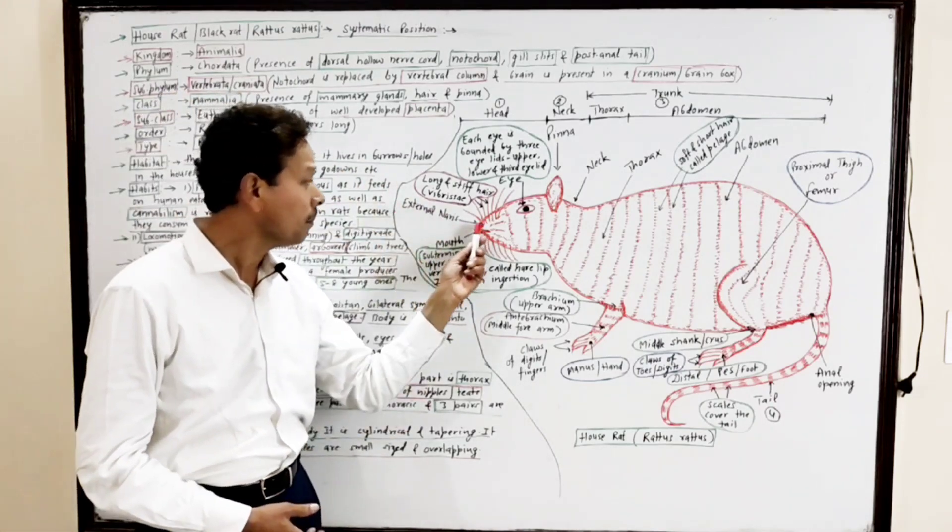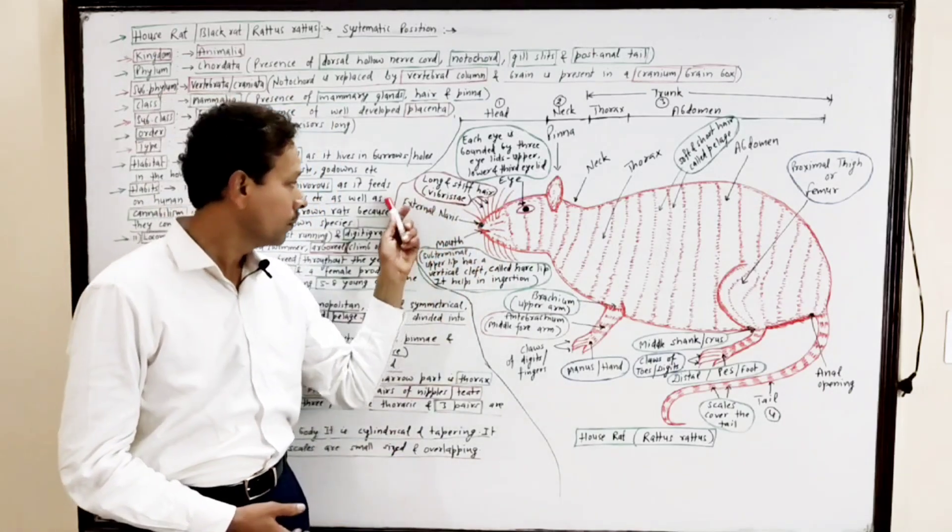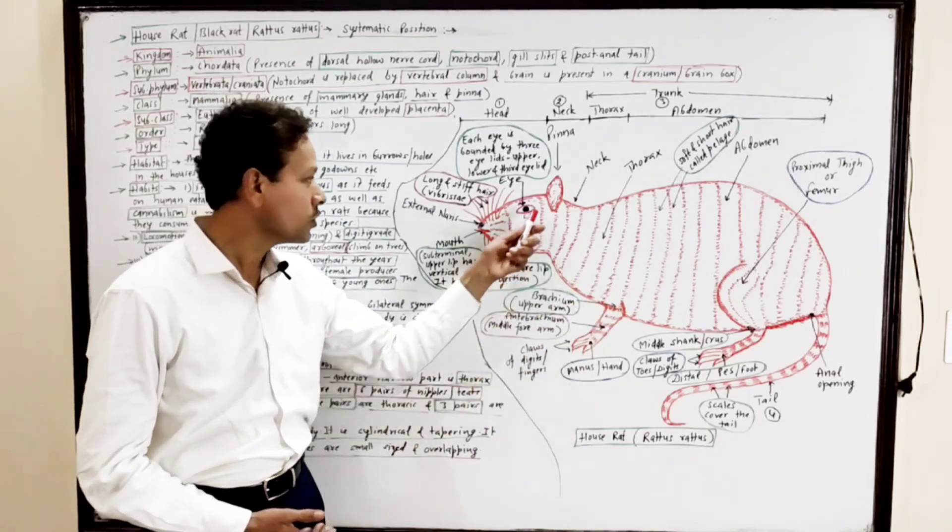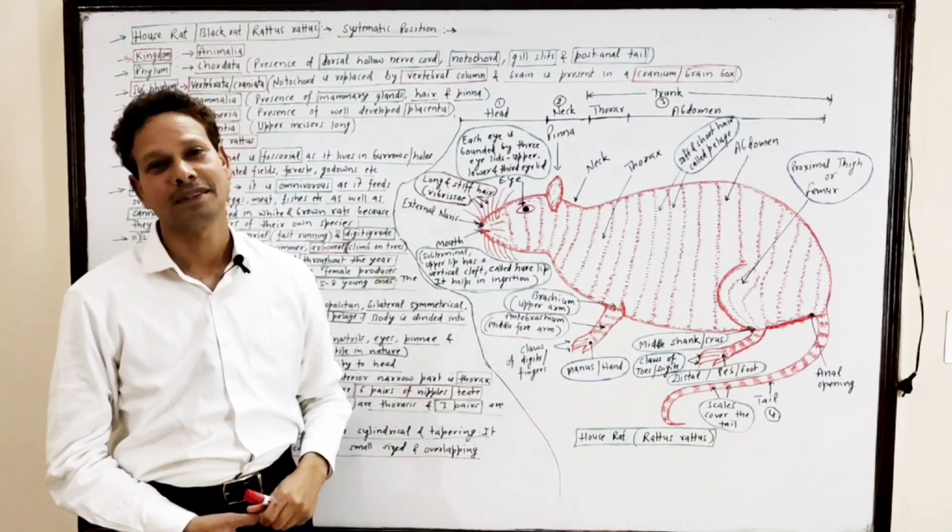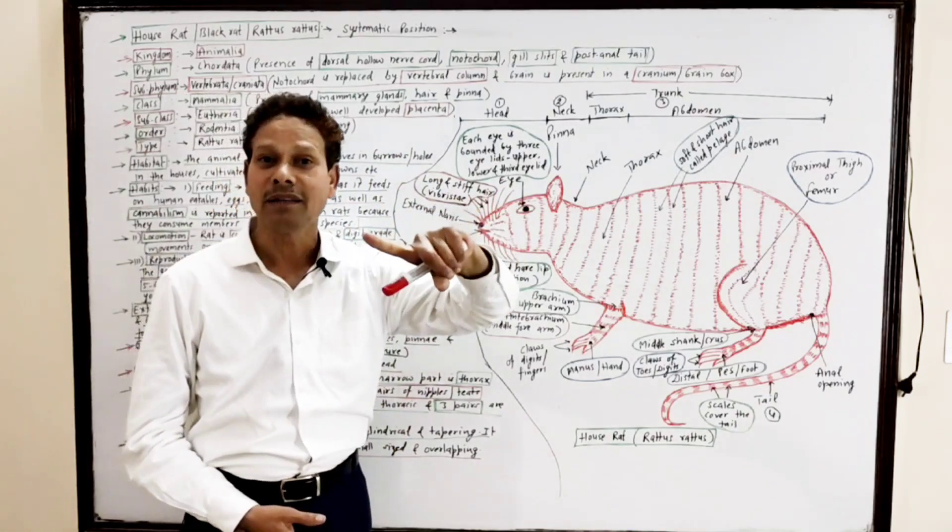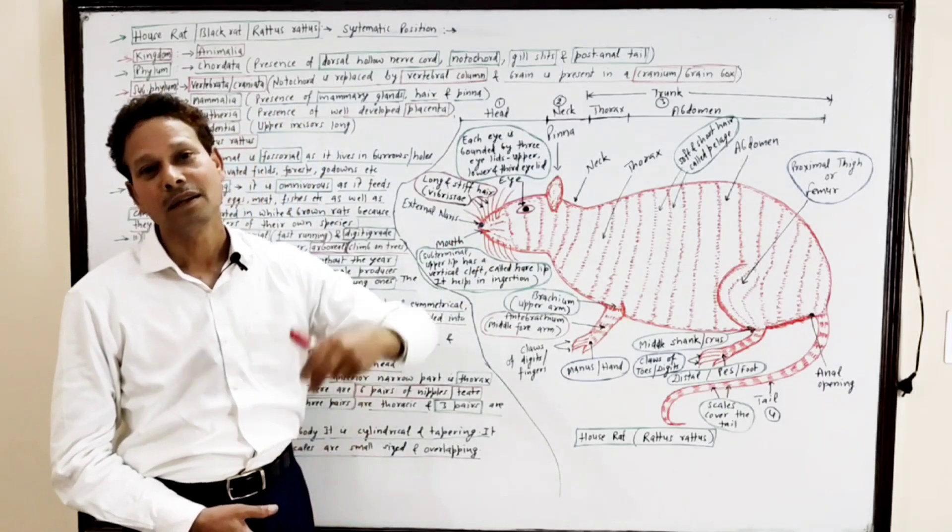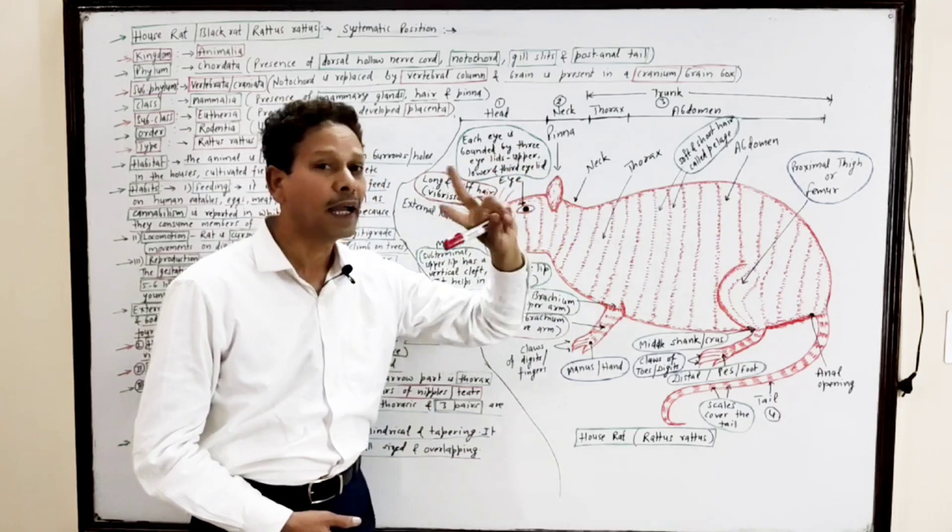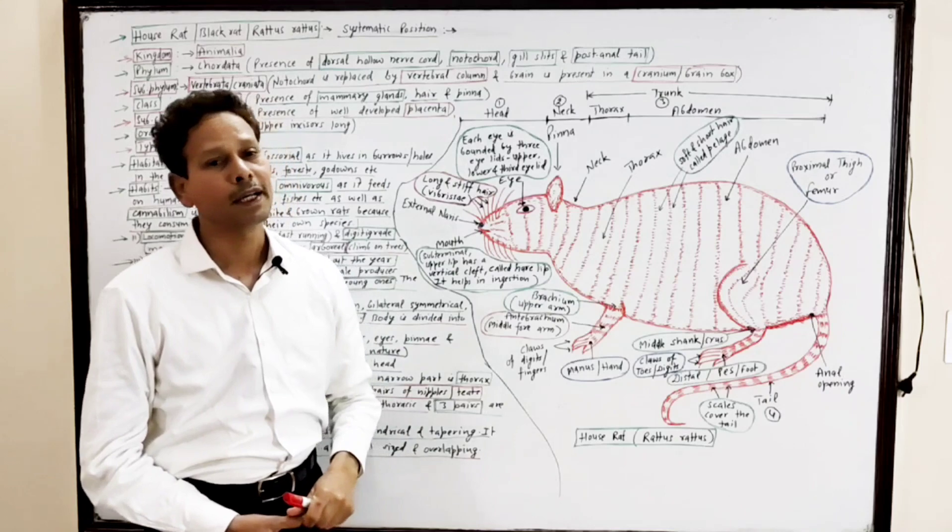These are a pair of external nostrils which are involved in breathing. The head also possesses a pair of eyes, and each eye is bounded by three eyelids: upper eyelid, lower eyelid, and third eyelid, the nictitating membrane, which is semi-lunaris.